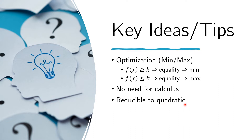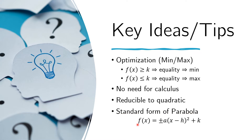Our tool of choice when dealing with quadratic functions is the standard form of the parabola: f of x equals some constant times x minus h squared plus k. If it's a plus, the parabola opens upwards and we are looking for a minimum. If it's a minus, the parabola opens downwards, so we are looking for a maximum. The value of the minimum or maximum is k, and h is the x value where that minimum or maximum is attained.